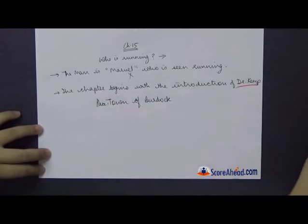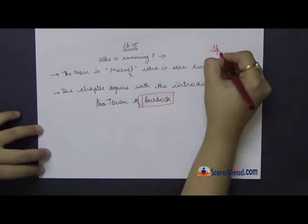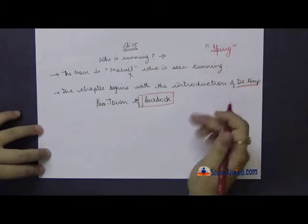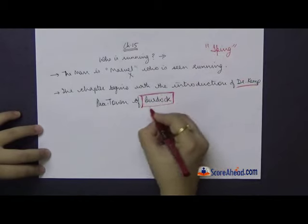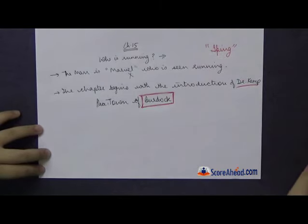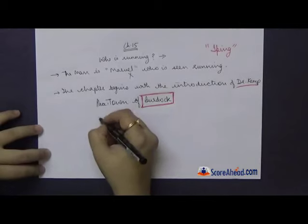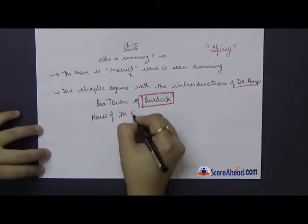Burdock is a very important place name to remember. The first important town was Aiping, which you already know well, and the second is Burdock. The scene has now shifted from Aiping and the road to the town of Burdock, where we see the house of Dr. Kemp.